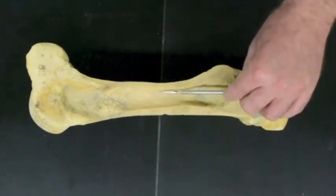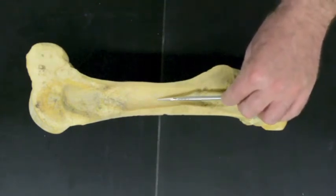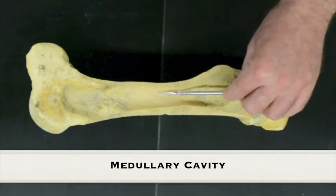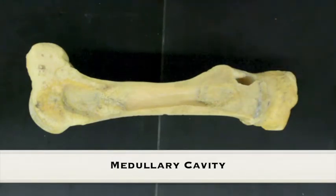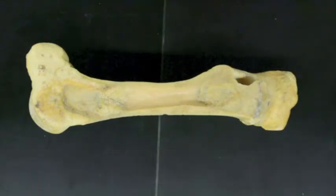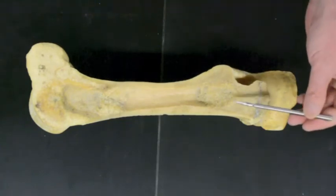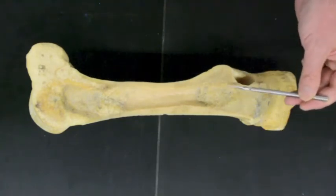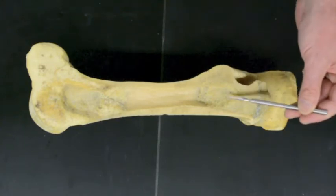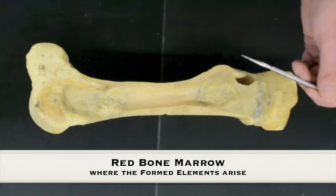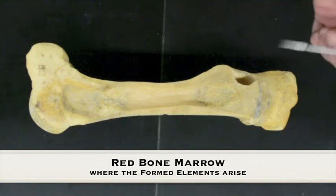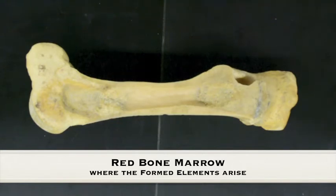The cavity in the middle here is called the medullary cavity, which contains yellow bone marrow, which is adipose or fat. In the spongy bone we have red bone marrow. The red bone marrow is responsible for making the formed elements in the blood.